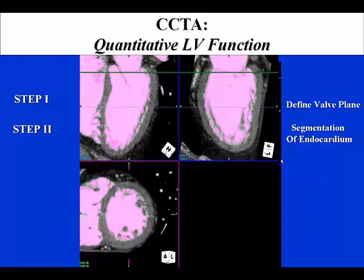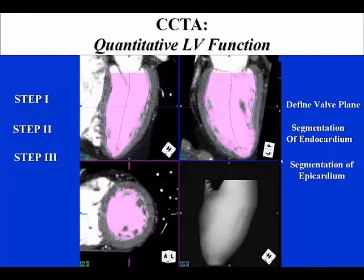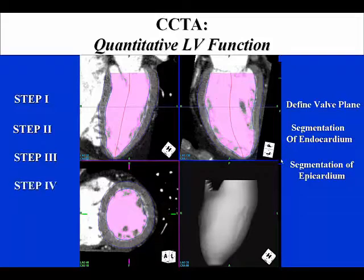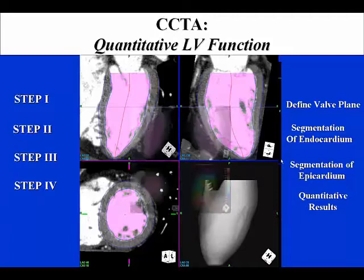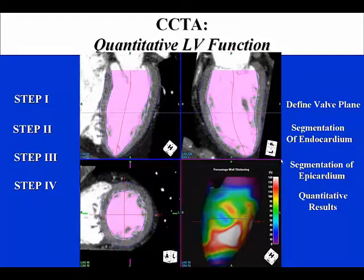Step 3 involves segmentation of the epicardial surfaces, as demonstrated here. Once the epicardial surfaces are demonstrated, one has the ability to look at quantitative information about the entire left ventricle. In Step 4, you can have quantitative results, which are demonstrated here, including in the lower right-hand panel a schematic illustration of cardiac function in a volumetric-type display.